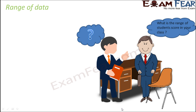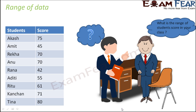Now we will talk about another important concept called range of data. Instead of asking about overall performance, if the principal asks what is the range of student scores in the class — the term range means the spread of data. It indicates how the marks obtained by different students are spread, meaning between what numbers they are lying. The minimum value here is 42.